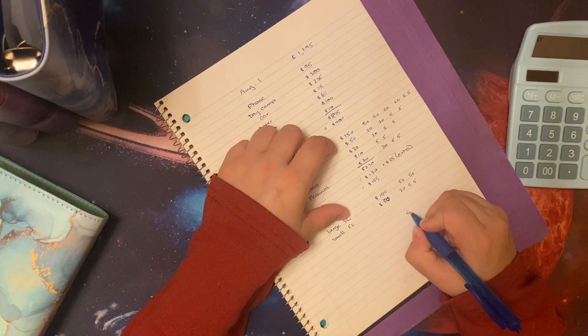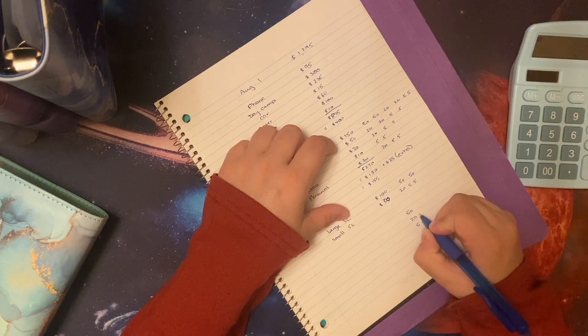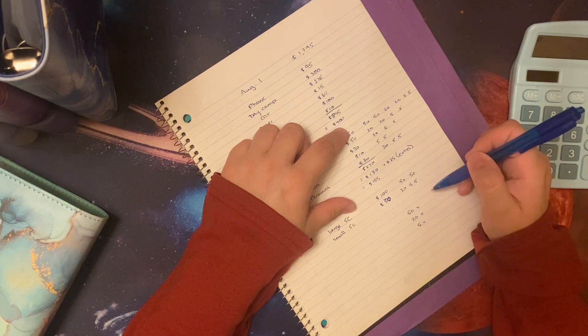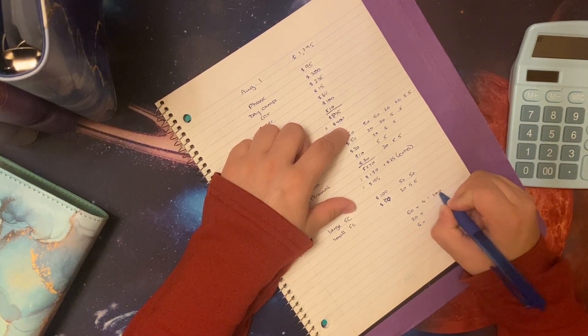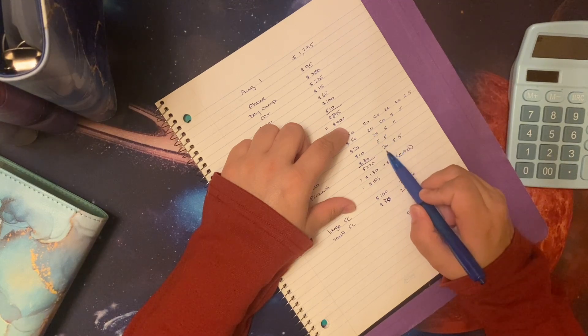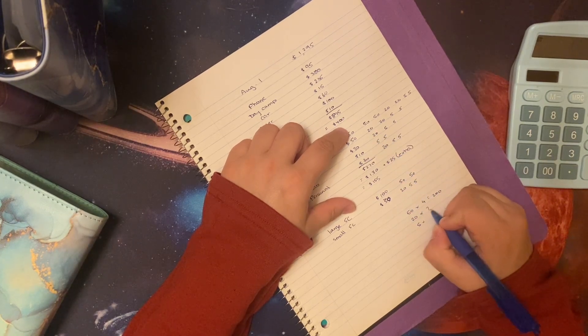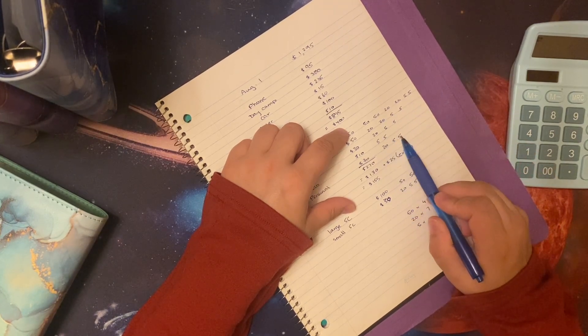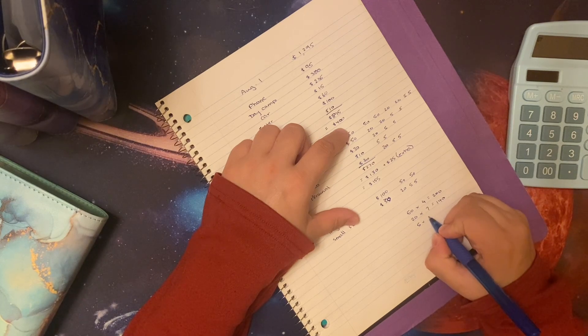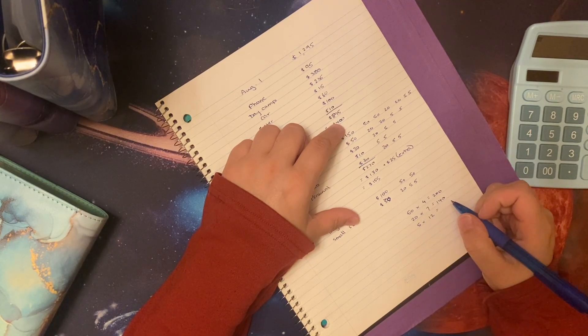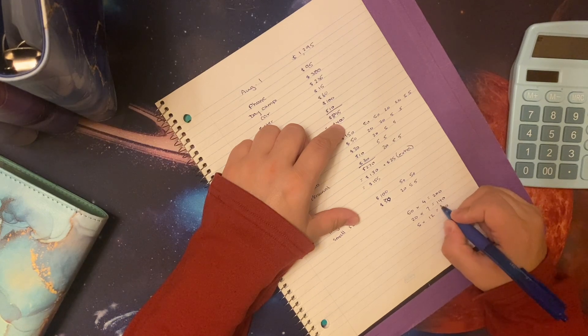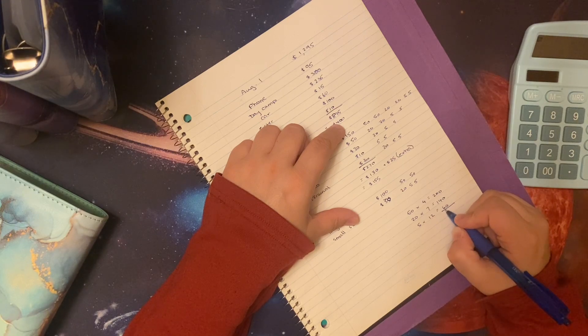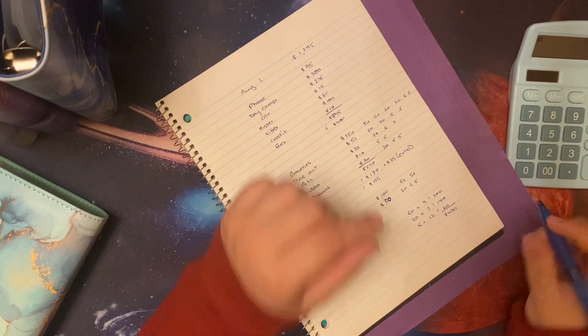So we're going to go 50, 20, five. So 50s, we got one, two, three, four, 200. 20s, we've got one, two, three, four, five, six, seven, eight, nine, 10, 11, 12, 60. So that's two, three, 40, four. Perfect. Yeah. Okay. So that's 400. Perfecto.